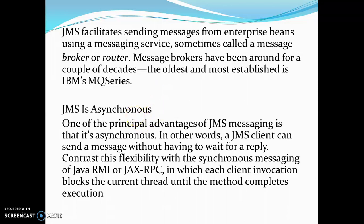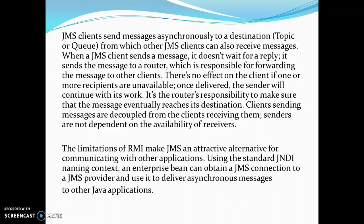JMS clients send messages asynchronously to a destination - usually a topic or queue - from which other JMS clients can also receive messages. When a JMS client sends a message, it does not wait for a reply; it sends the message to a router which is responsible for forwarding the message to other clients. There is no effect on the client if one or more recipients are unavailable. Once delivered, the sender will continue with its work. The router is responsible to make sure that the message eventually reaches its destination. Clients sending messages are decoupled from the clients receiving them; senders are not dependent on the availability of receivers.